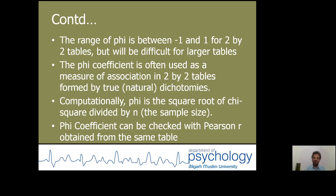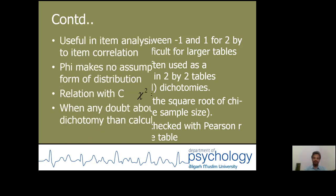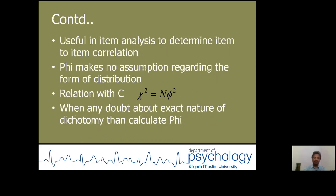Phi coefficient can be checked with Pearson R obtained from the same table. It is useful in item analysis to determine item-to-item correlation. Phi coefficient makes no assumption regarding the form of distribution, so it is a distribution-free test.